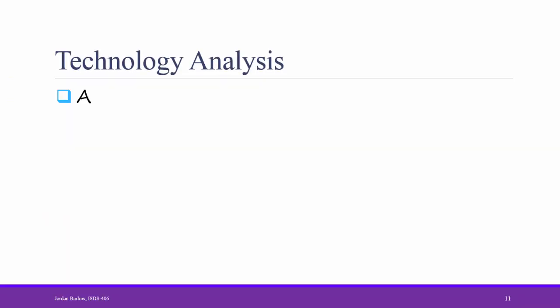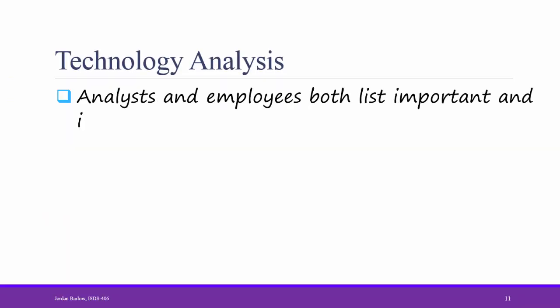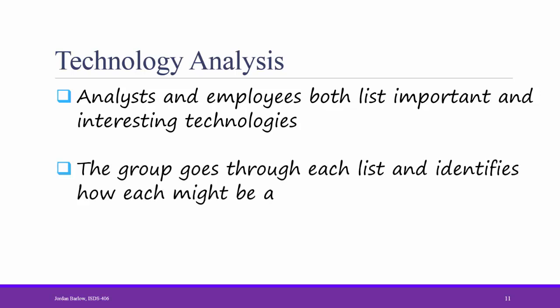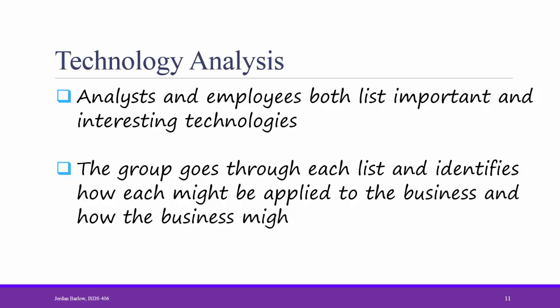In technology analysis, the analyst and the employees both list important and interesting technologies. Then the group goes through each list and identifies how each might be applied to the business and how the business might benefit. For example, the analyst or the employees might consider that more and more people are using mobile apps, so they might consider automating some portion of the mortgage process to a mobile app — for example, allowing a customer to check on their app whether their loan has been approved.